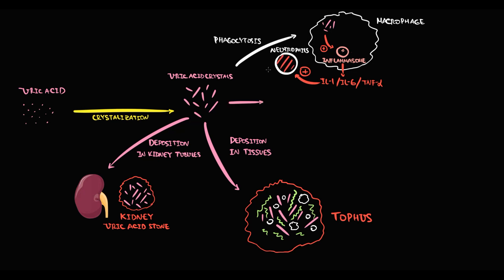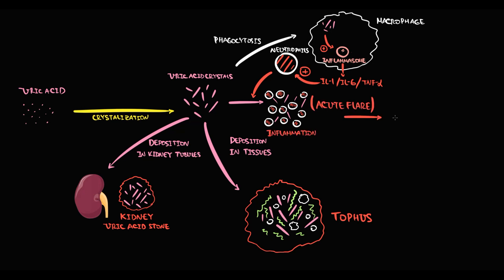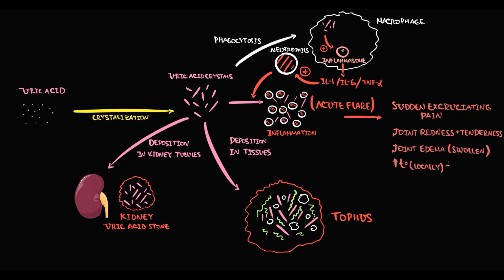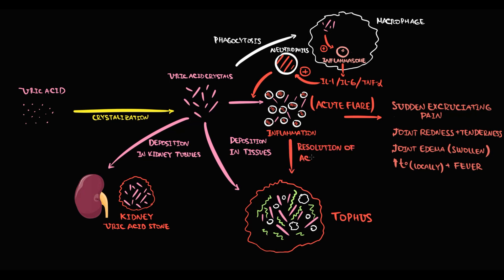Neutrophils come to the uric acid crystals and try to phagocytose them, creating huge local inflammation inside the joint. We call this state acute flare. Severe local inflammation causes sudden excruciating pain inside the joint. Inflammation also manifests with joint redness, tenderness, and joint edema, and causes both local and systemic increase in temperature.